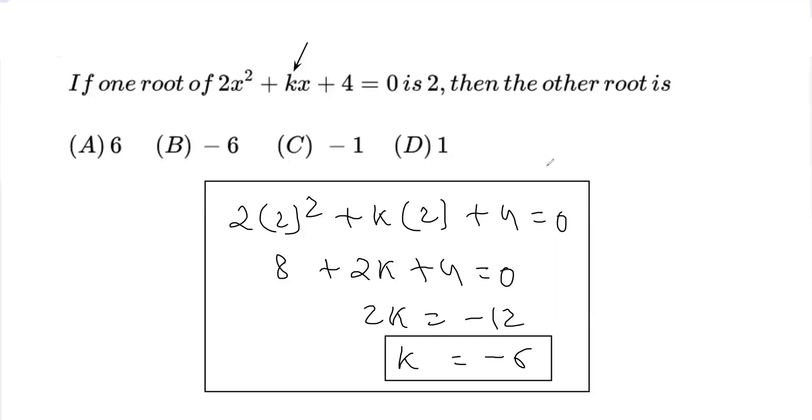Now I'm placing the value of k. The equation transforms to 2x² - 6x + 4 = 0.